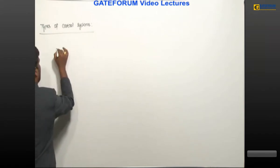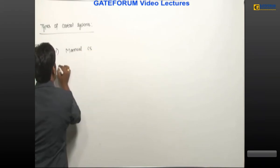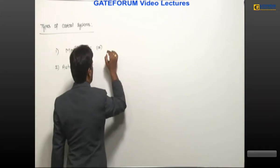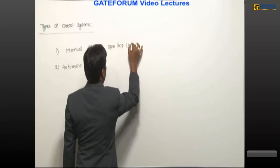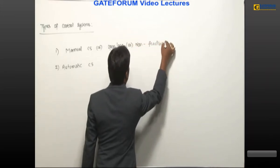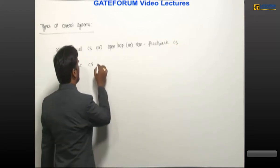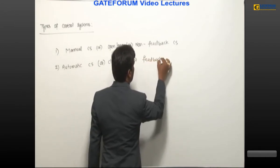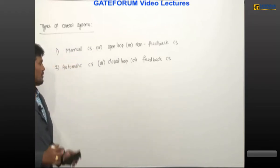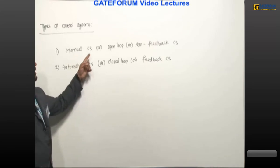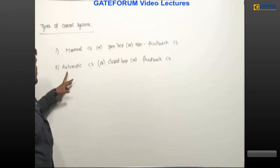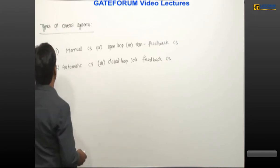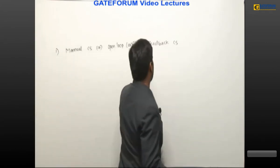There are two types of control systems. One is manual control system, also called open loop control system or non-feedback control system. The second is automatic control system, also called closed loop control system or feedback control system.